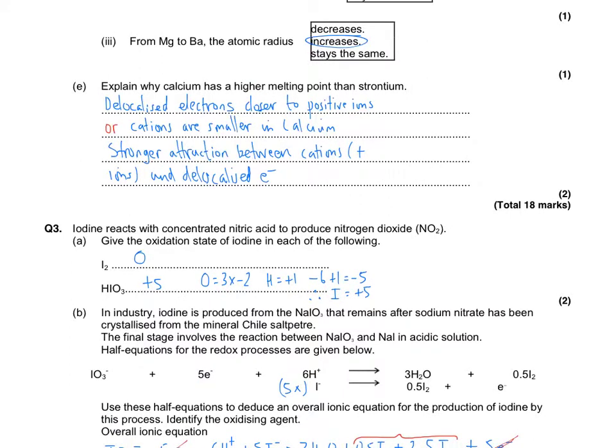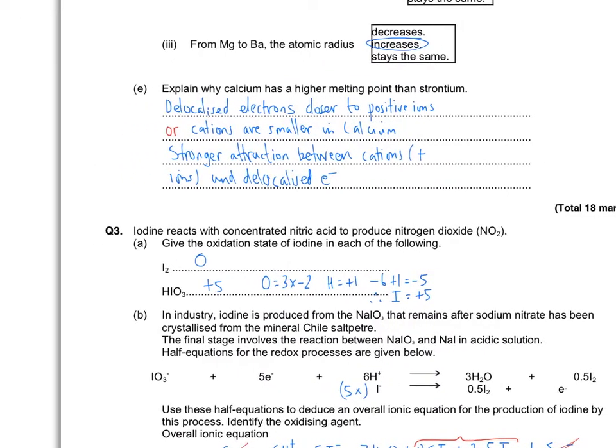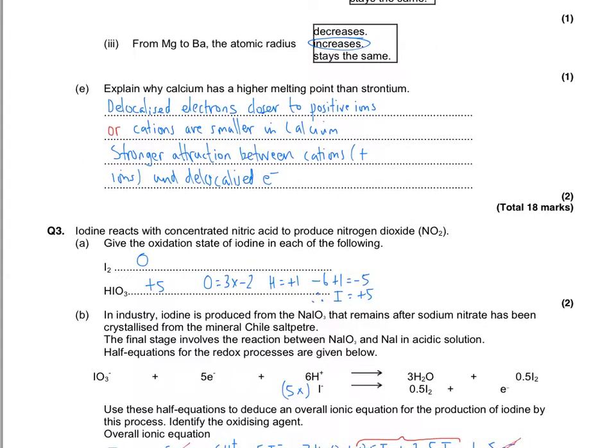Explain why calcium has a higher melting point than strontium. It's all about the strength of the metallic bonds. So the delocalized electrons in calcium are closer to the positive ions. And therefore, a stronger attraction between the positive cations and the negative delocalized electrons means a stronger metallic bond.